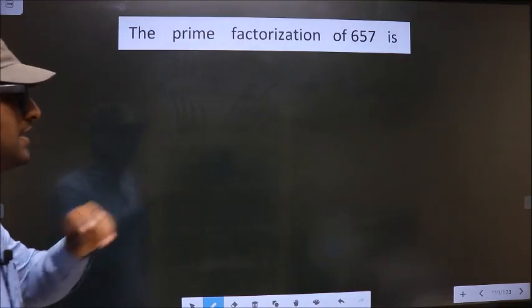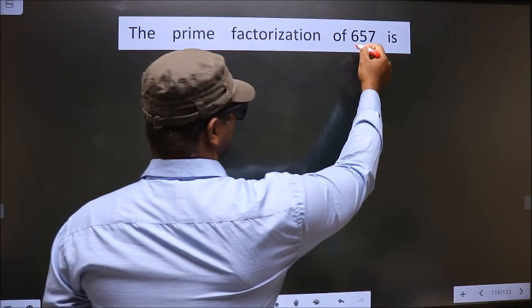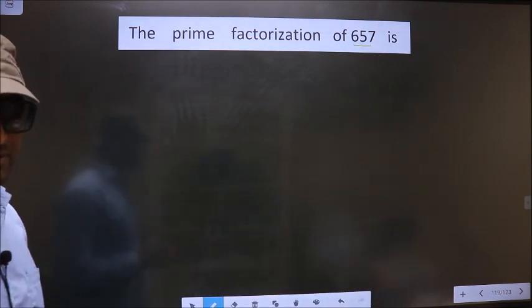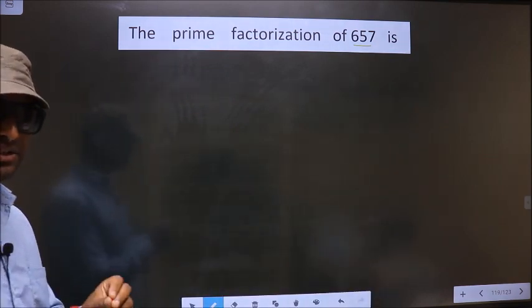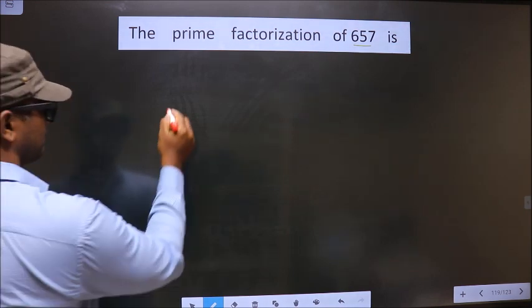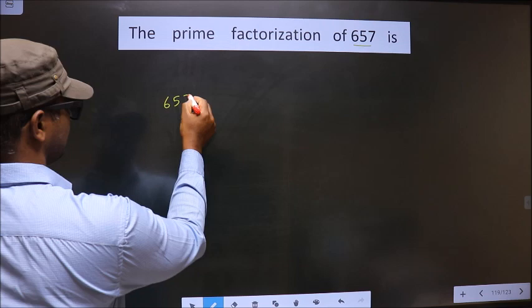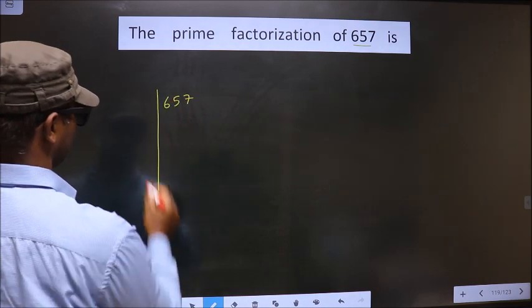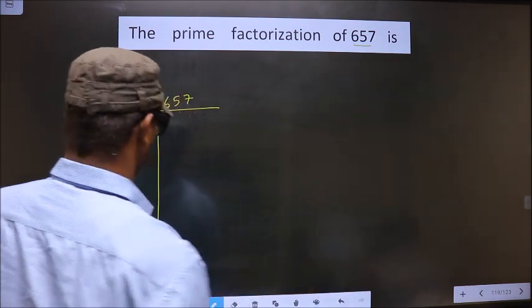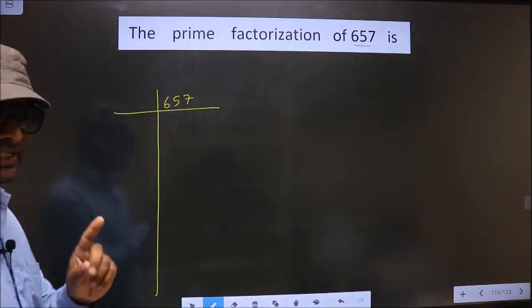The prime factorization of 657 is... To do prime factorization, first we should frame it in this way. See, 657. This is your step 1.